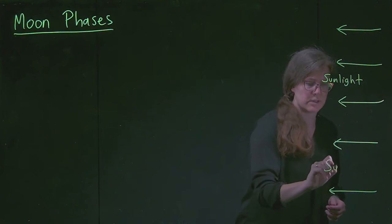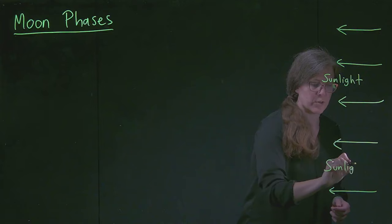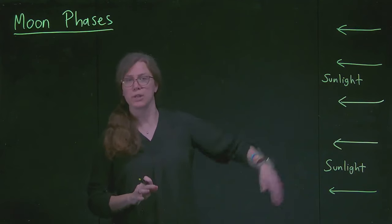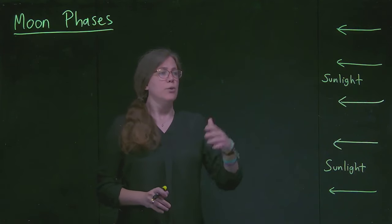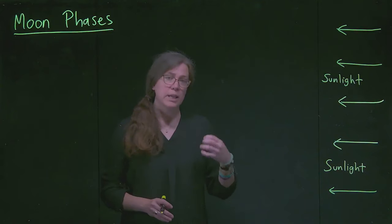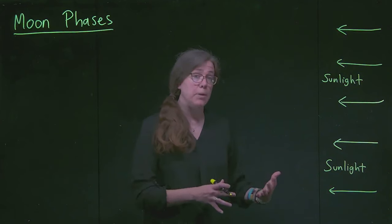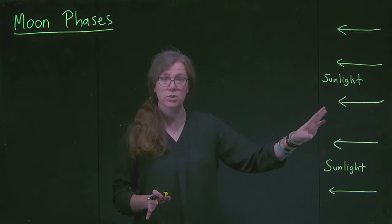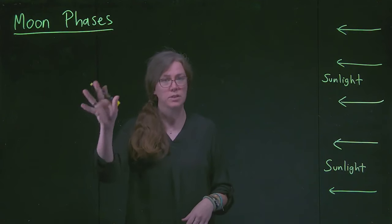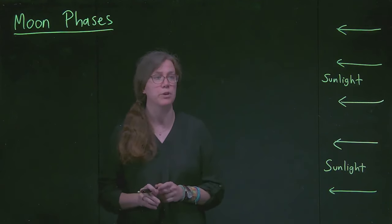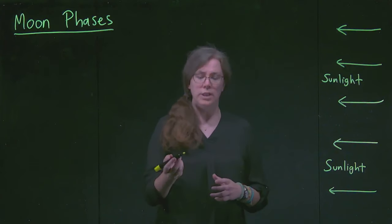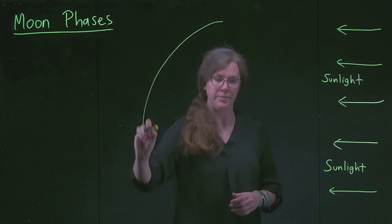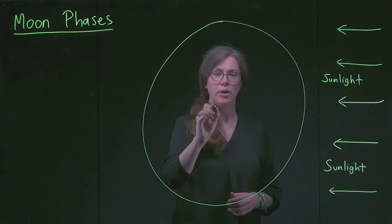Sunlight is coming in from the Sun, which is very far away to the right side of our page — that's what we'll see most consistently in our resources. From that, we can think about what is lit up and what is dark. Since sunlight comes from a single direction, anything on the opposite side of an object would be dark. Let's think about that in the context of the Moon's orbit around the Earth.